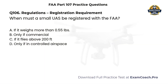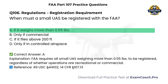Regulations. Registration requirement. When must a small UAS be registered with the FAA? A. If it weighs more than 0.55 pounds. B. Only if commercial. C. If it flies above 200 feet. D. Only if in controlled airspace. Correct answer: A. FAA requires all small UAS weighing more than 0.55 pounds to be registered, regardless of whether operations are recreational or commercial.